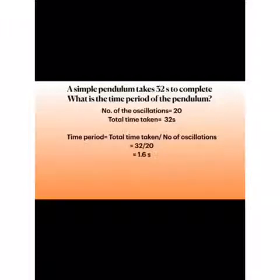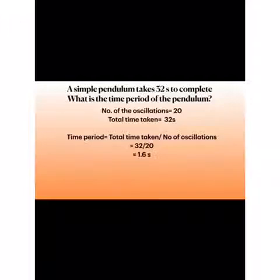Let's calculate the time period of the pendulum. Suppose a simple pendulum takes 32 seconds to complete 20 oscillations. What is the time period? The time period is calculated by dividing the total time taken by the number of oscillations: 32 divided by 20, which equals 1.6 seconds.